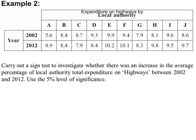Moving on to the next example. Carry out a sign test. Again, these are paired values using a 5% level of significance. And we're looking for an increase, a one-tail test.